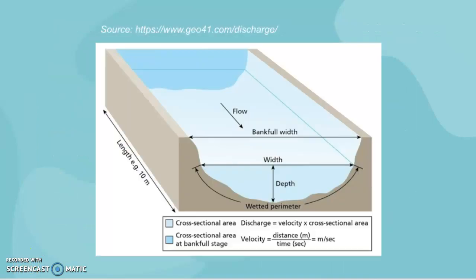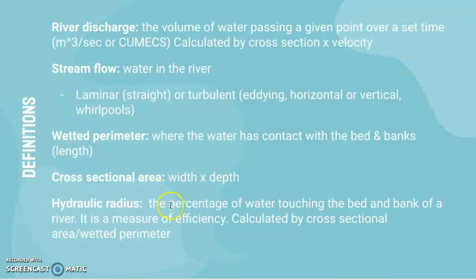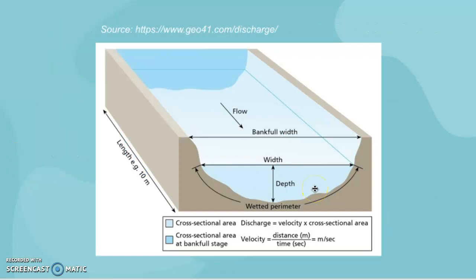This diagram gives a clearer representation. The wetted perimeter is the boundary where the water touches the banks and bed of the river. When you calculate hydraulic radius, you take the cross-sectional area — width times depth — of the whole area, and divide it by the wetted perimeter.